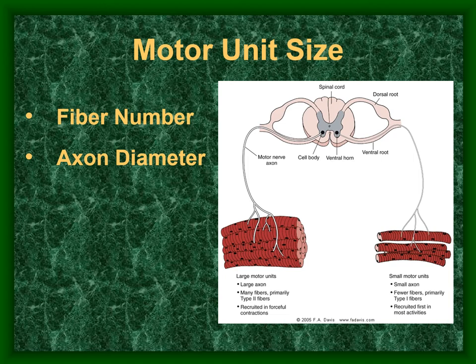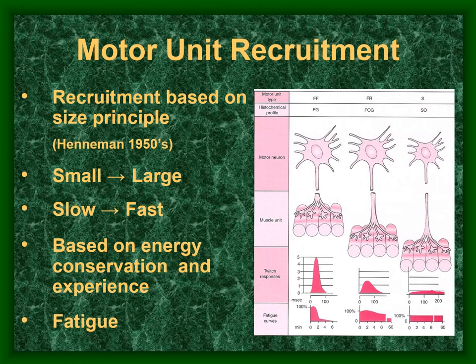The larger the cell body of the alpha motor neuron, the more central nervous system input is required to recruit it. Given the same input, the smallest cell bodies recruit first, activating the smallest motor units that generate the least tension. This is important for energy conservation — using only the tension needed for a given task.